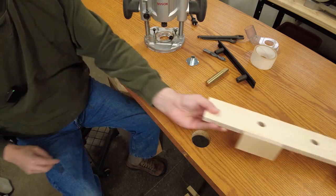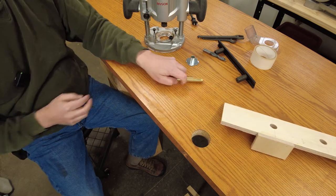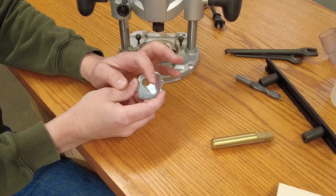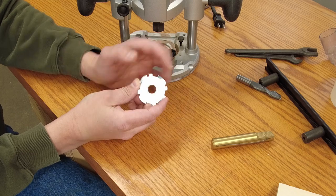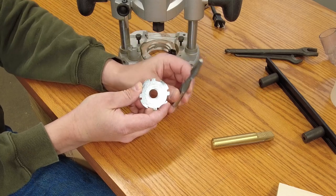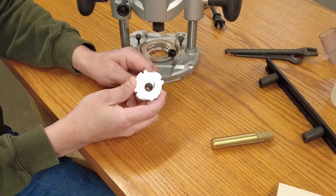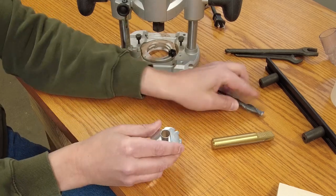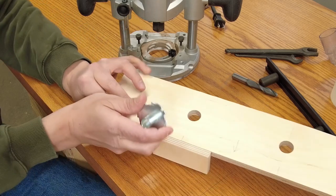Now the reason I made those holes wider than three quarters of an inch is because I'll be using this router template guide in my plunge router. This is a five-eighths outside diameter guide and I'm going to use a half inch bit and the distance between the bit and the outside of this guide is an eighth of an inch and that's why I had to make these oversize.